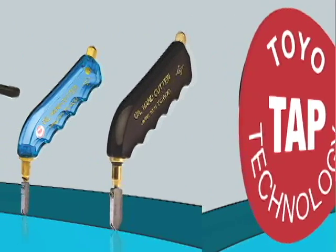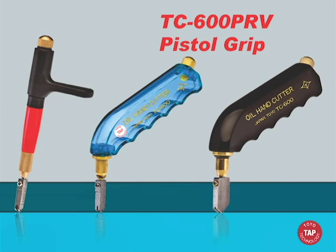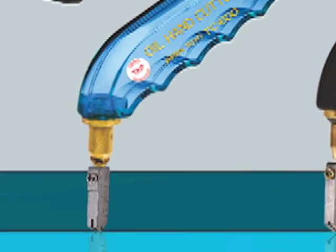Patented Toyo tap technology is part of the TC21 Custom Grip, the TC600PRV Pistol Grip, and the TC600SVB Black Handled Pistol Grip for Thick Glass.